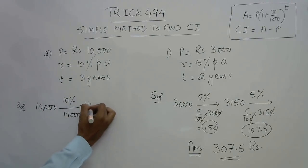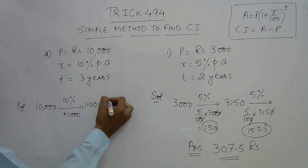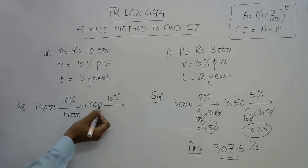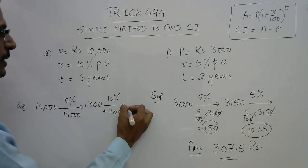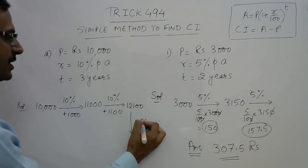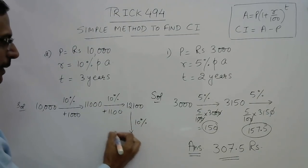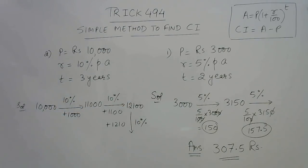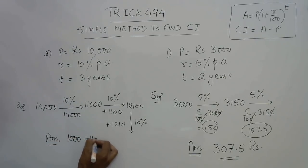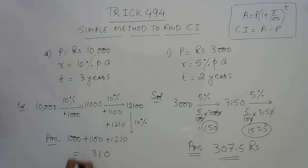For year two at 10%: place a decimal one digit from the right of 11,000, giving 1100 interest — total 12,100. For year three at 10%: 10% of 12,100 = 1210 interest. The interest increases every year because the principal grows each year. Now simply add the three interests: 1000 + 1100 + 1210 = 3310 rupees is the answer.